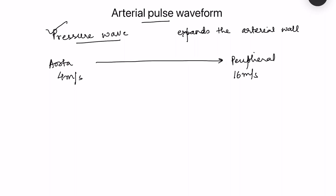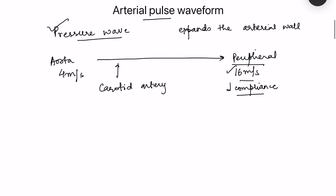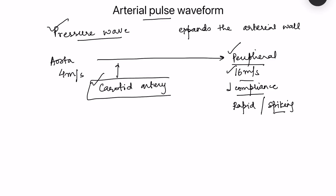The contour of the pulse — how it rises and falls — is known as the pressure waveform or character of the pulse. This is felt differently in central versus peripheral arteries. In central arteries we palpate the carotid artery to feel the arterial pulse waveform. In peripheral arteries, due to increased velocity and decreased compliance, the pulse is felt more rapid and spiking, with a greater peak height. To assess the pulse waveform properly we must palpate the carotid artery.